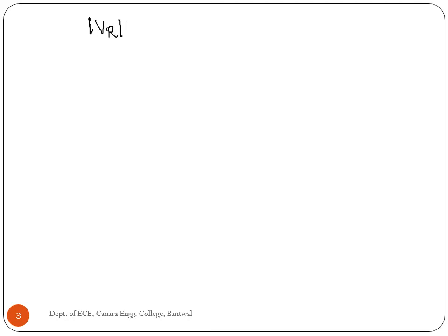Now we have to find out repeller voltage. The repeller voltage notation Vr expression is: 6.74 × 10⁻⁶ multiplied with frequency in hertz, multiplied with repeller space in meters, then multiplied with the square root of beam voltage value.